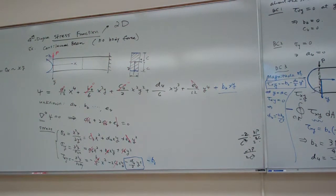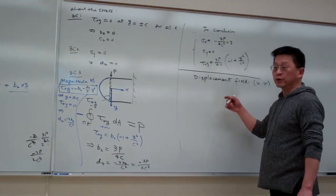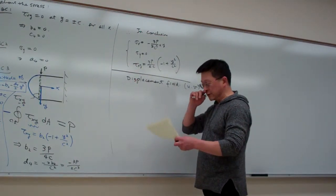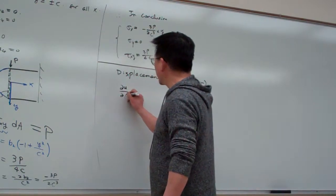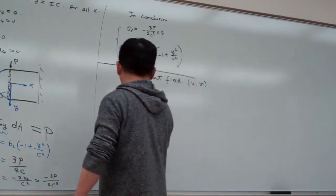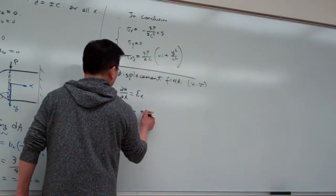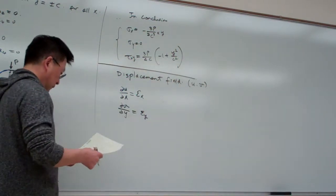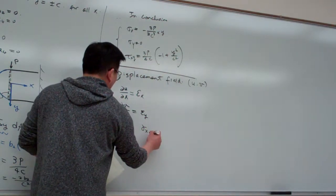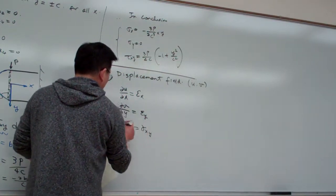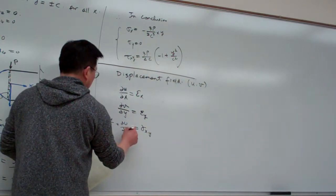So to find the displacement field, we know that displacement is derived from the strain. Here, partial U over partial X equals epsilon X, and partial V over partial Y equals epsilon Y. And then gamma XY equals partial U over partial Y plus partial V over partial X.